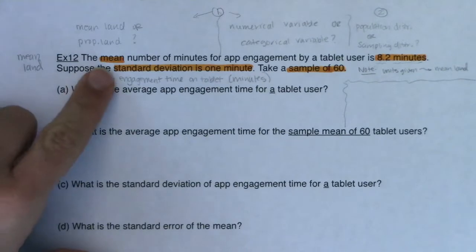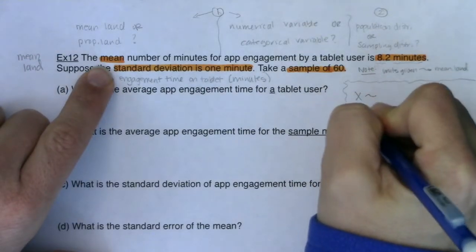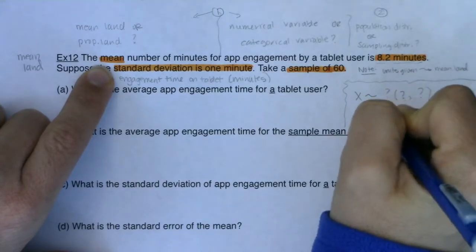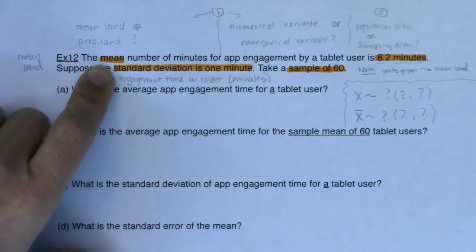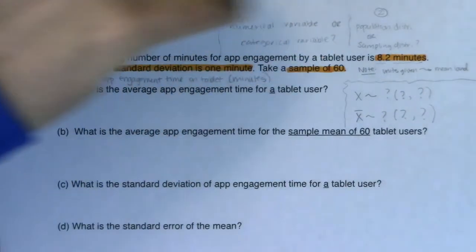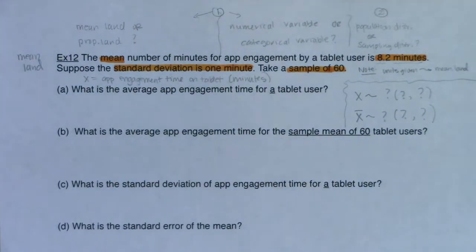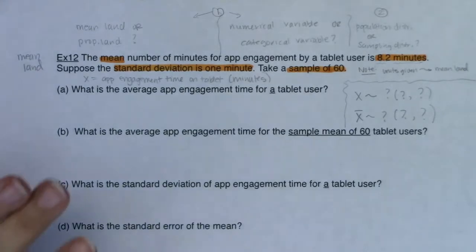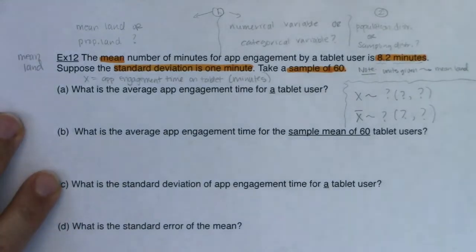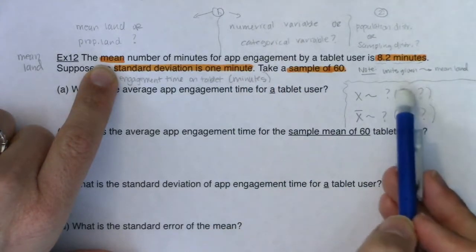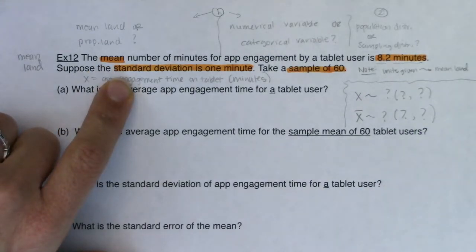Once you know you're in mean land, you can set up your six question marks — that's the method for mean land; proportion land is completely different. So with that, let me see what I can fill in before I even read part a. We know the mean number of minutes for app engagement time is 8.2 and the standard deviation is 1, so I'll fill those in right here.